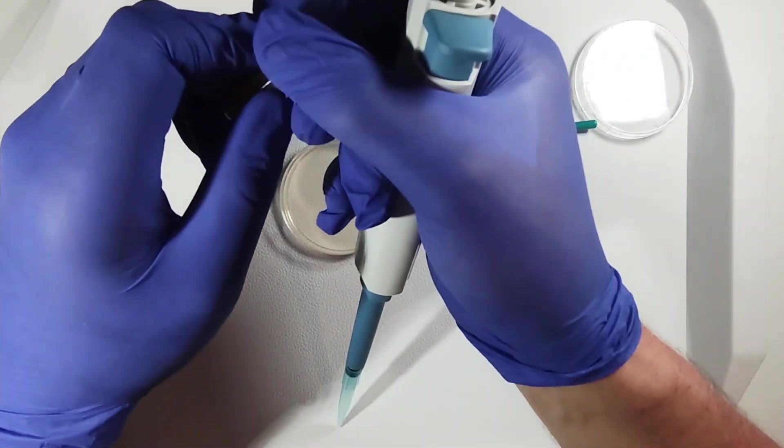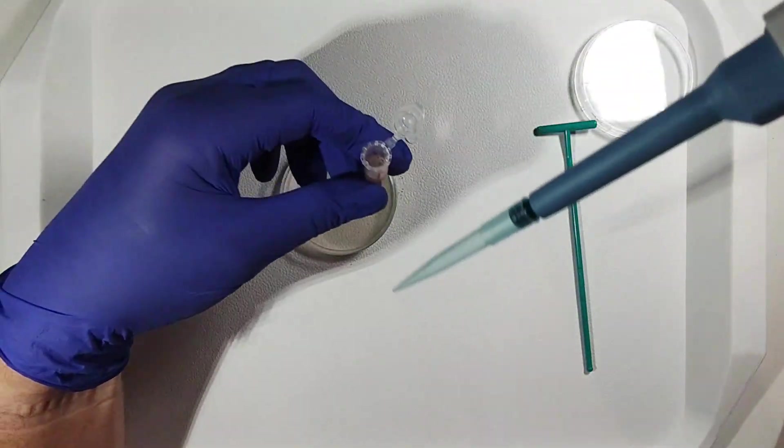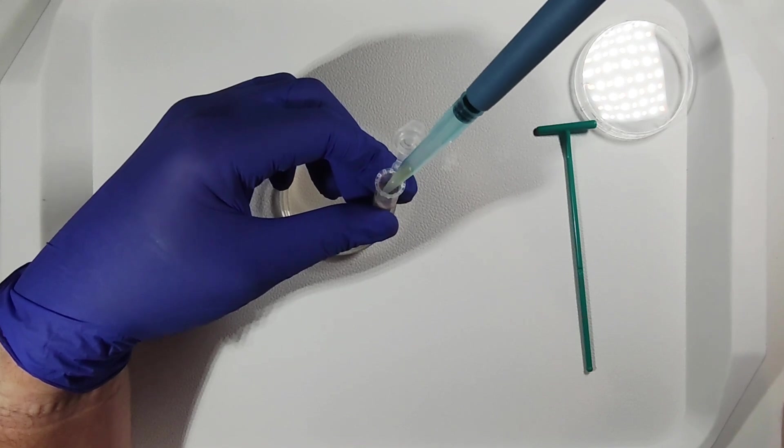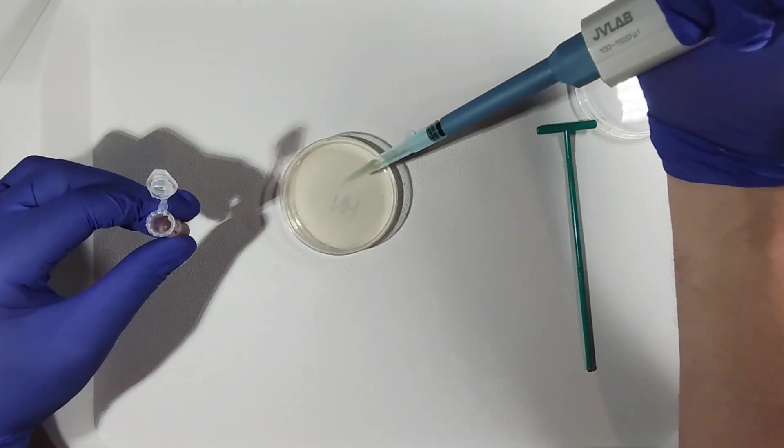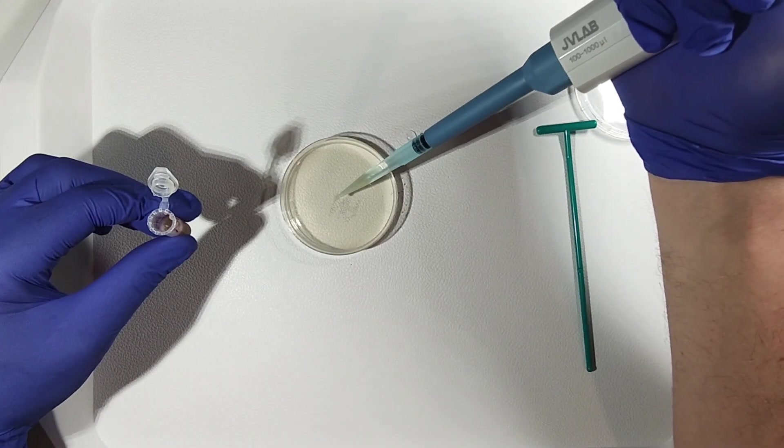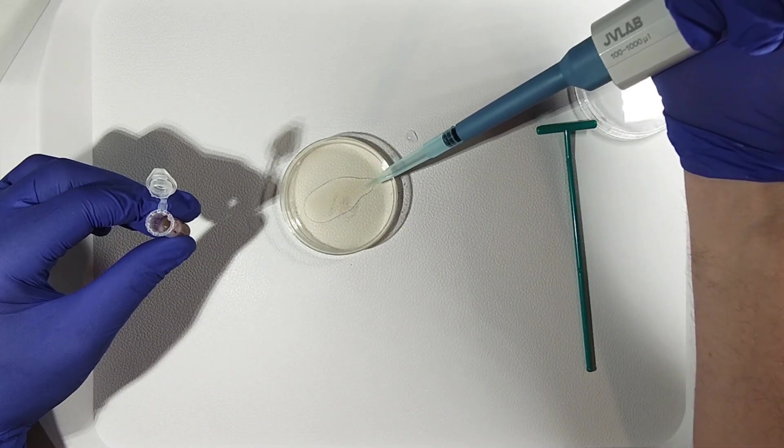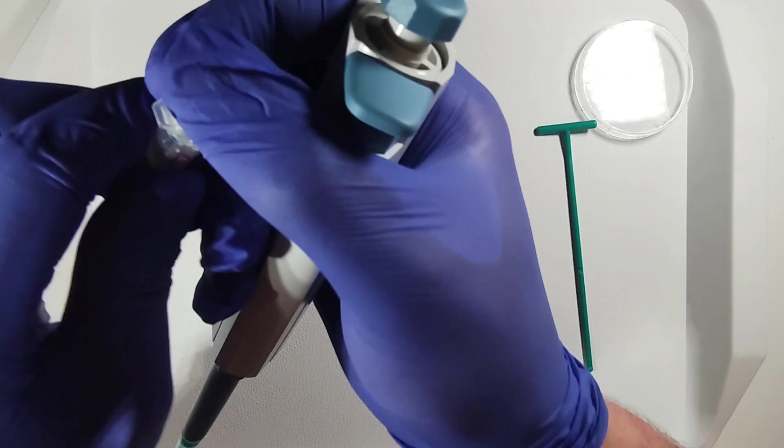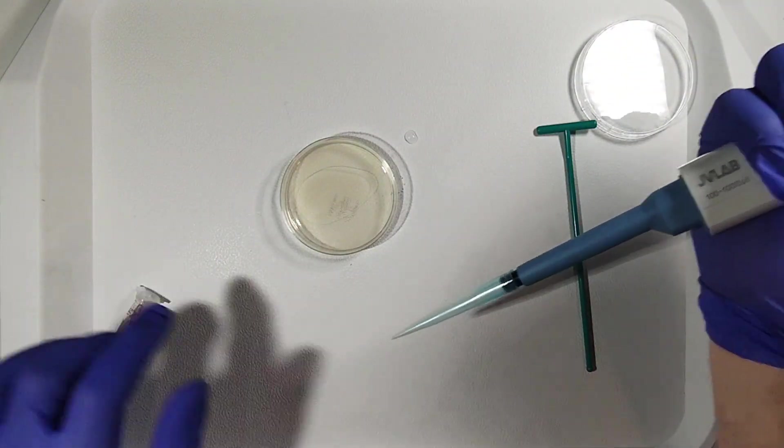Now, we need an automatic pipette set to 0.2 ml to apply the sample onto the agar. Precision is crucial because it ensures that each sample is applied in a consistent and accurate manner, which is essential for obtaining reliable and comparable results across all samples.